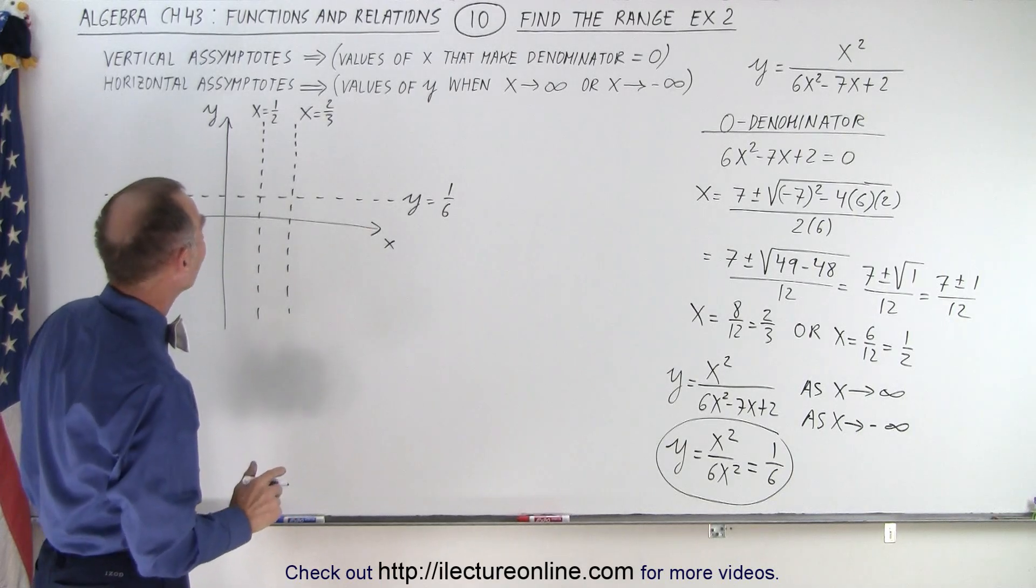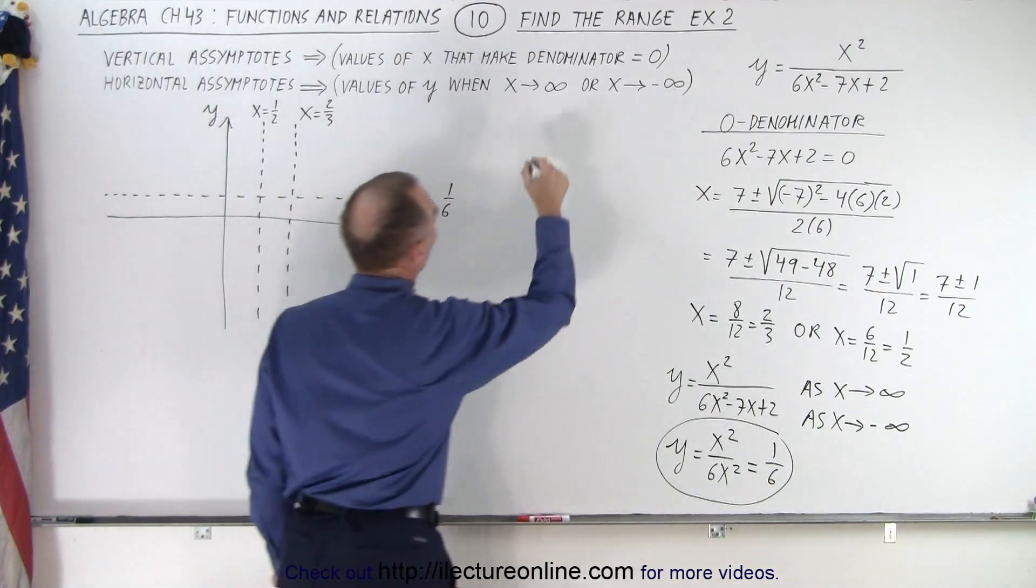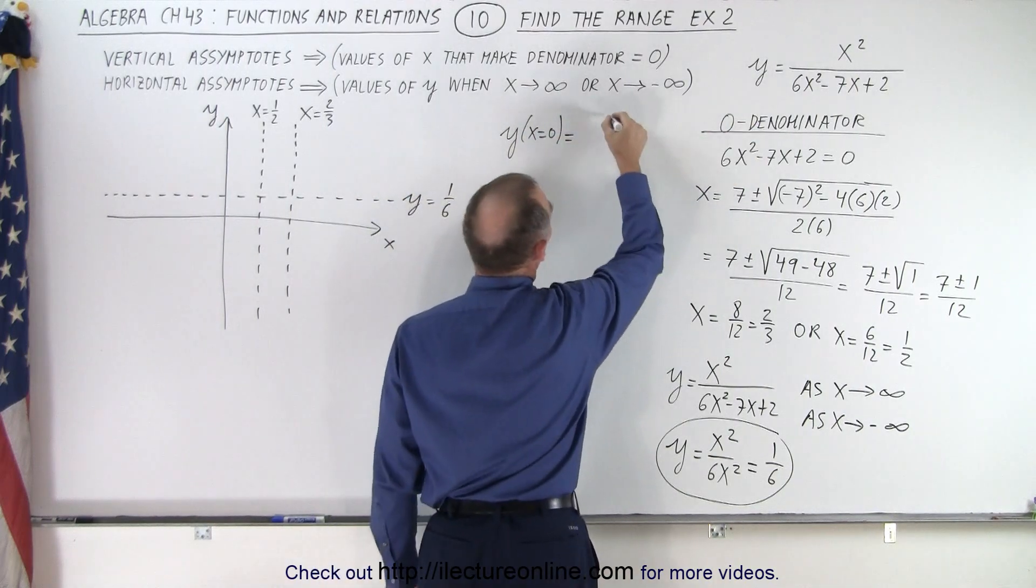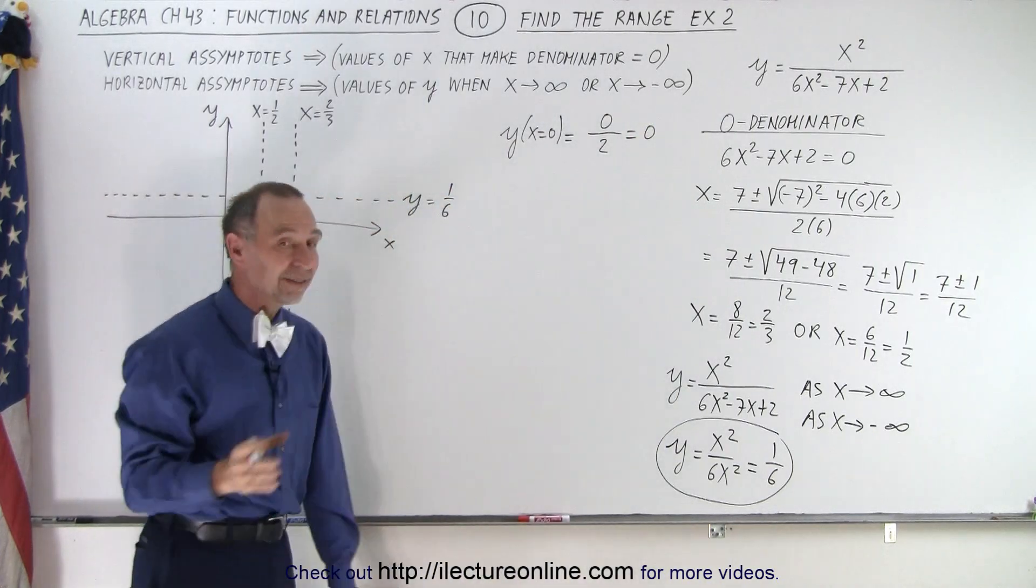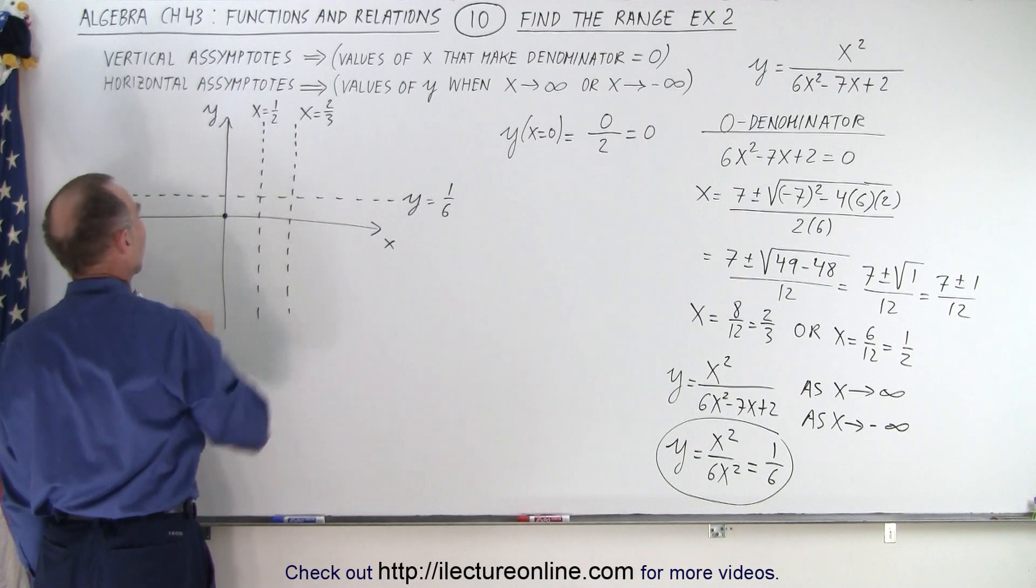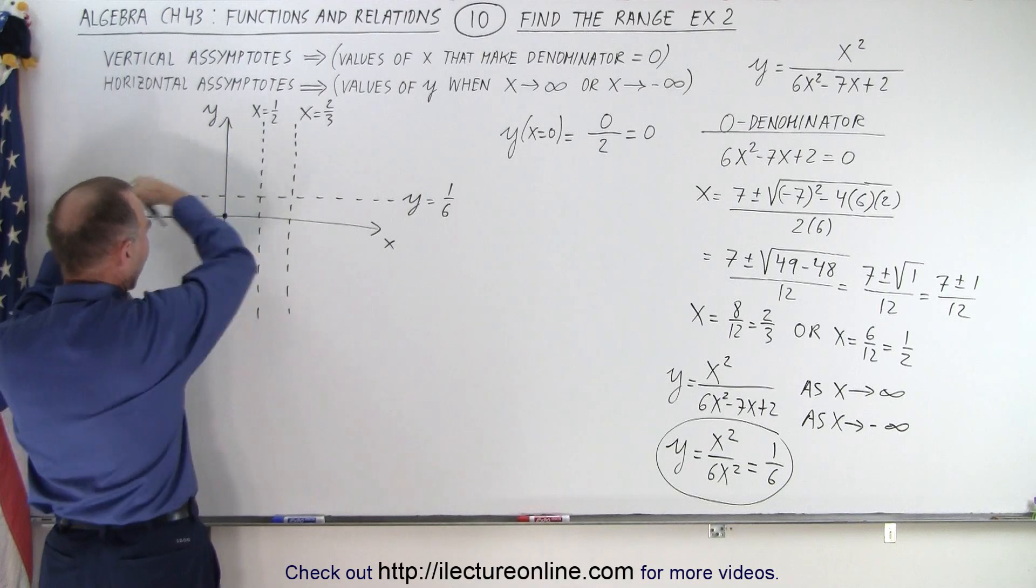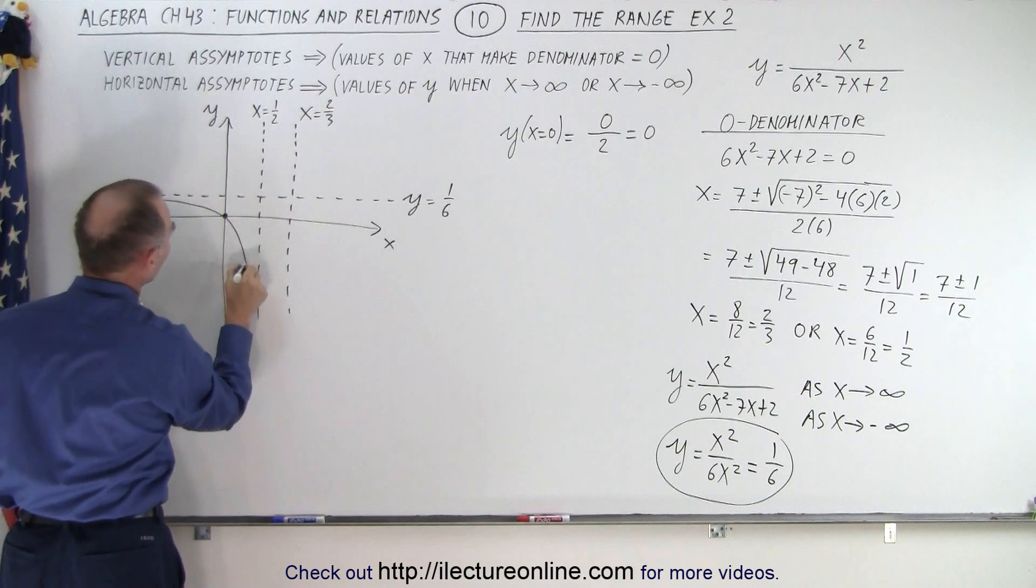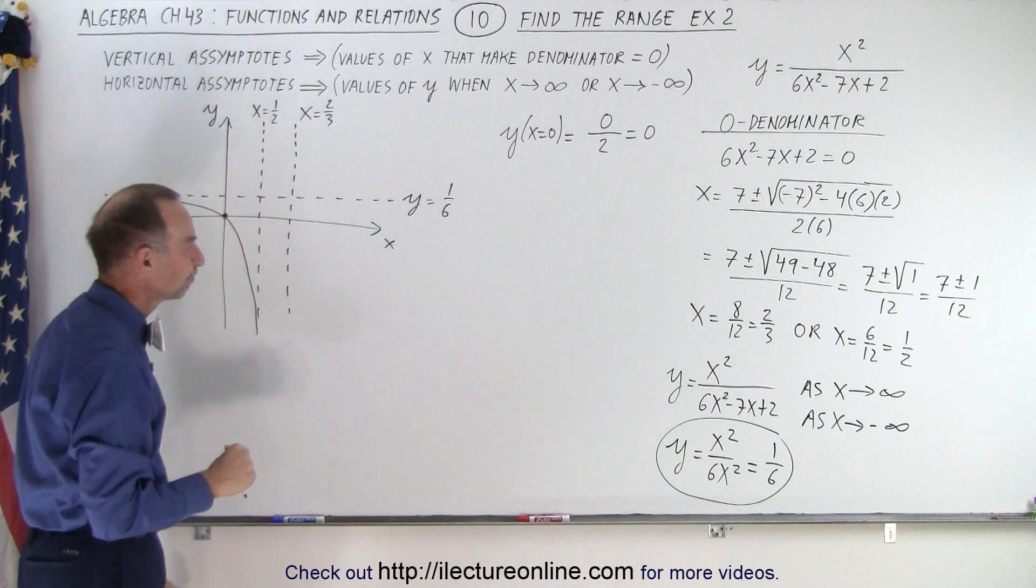So now, to get a feel for it, we can plug in some values. For example, what happens when x becomes 0? So y, when x equals 0, is equal to 0 divided by positive 2, which is 0. So when x equals 0, y equals 0. So that means we have a point on the graph that's there, which is in this region of the graph that's bounded by those two asymptotes. So that means that the only way we can draw a graph that goes to that point and doesn't cross those two asymptotes is something that kind of looks like this.